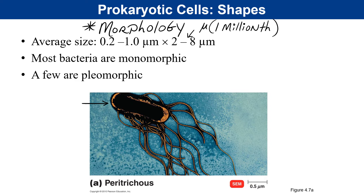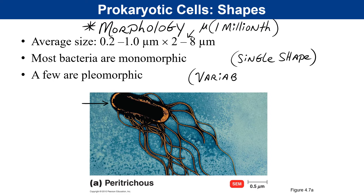Most bacteria are typically monomorphic — mono meaning one shape. Less commonly, some bacterial species are pleomorphic — pleo meaning variable in shape. These are harder to identify because they don't always appear under the microscope with one consistent shape. For example, a rod-shaped bacterium might occasionally appear more like a spherical coccus-shaped bacterium, or even as coccobacilli, while still being the same species.